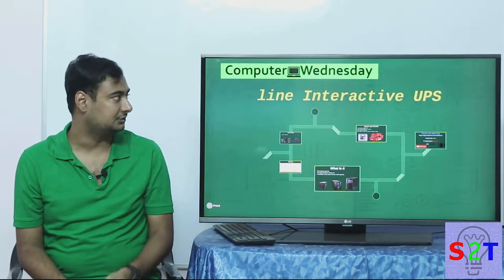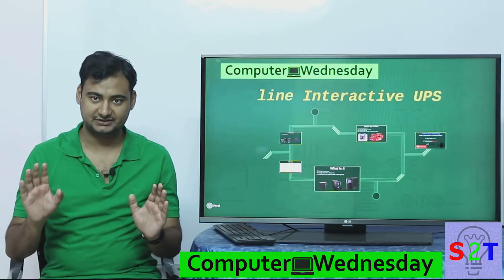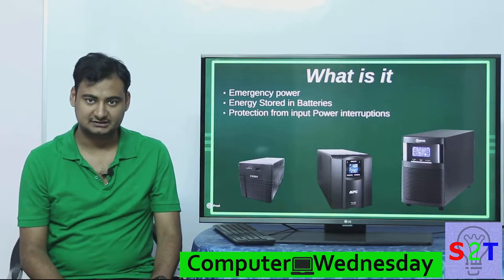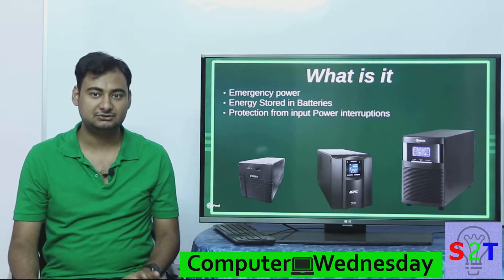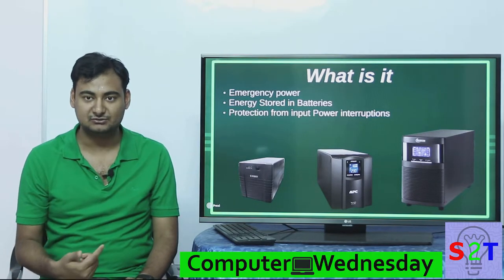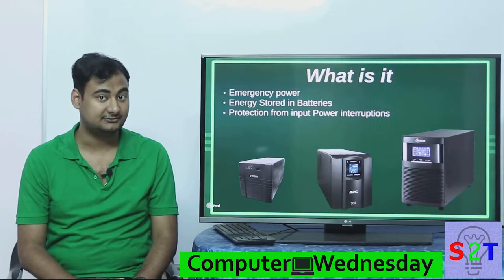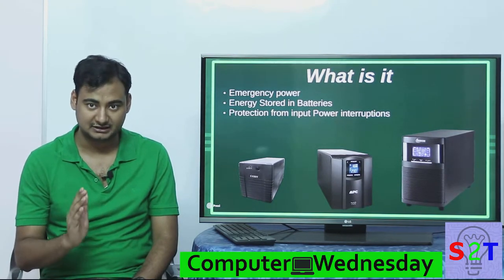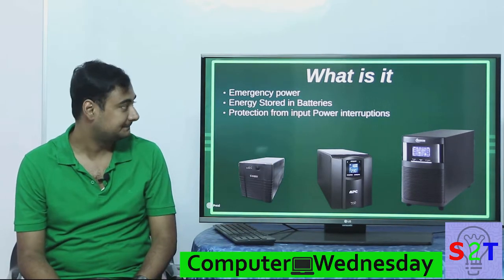Welcome to Computer Wednesday. In today's episode we're going to take a look at the UPS. It is a very simple device that acts as a buffer between your main power source and your computer. It allows you to do what's called a safe shutdown — basically if you have hard drives, they really don't like to be directly disconnected, as you might corrupt the data stored in them. For data security, we want to make sure there is no power that randomly cuts off.